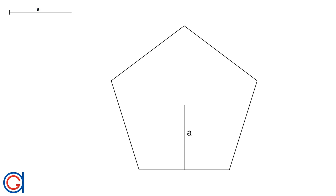Hello, today we are going to learn how to draw a regular pentagon given its apothem A. The apothem of a regular polygon is a line segment from the center of the polygon to the midpoint of any one of its sides. The length of this apothem is also the radius of a circle inscribed in the regular pentagon. First we will calculate the side of a regular pentagon inscribed in a circle, then draw the final pentagon proportional to the inscribed one.